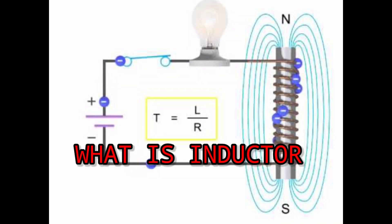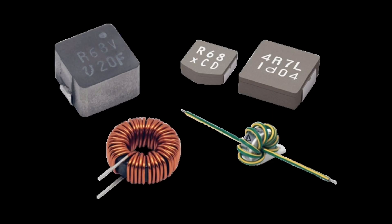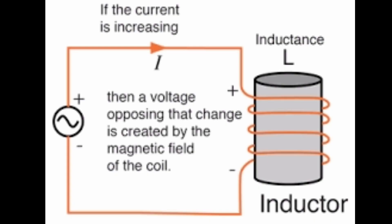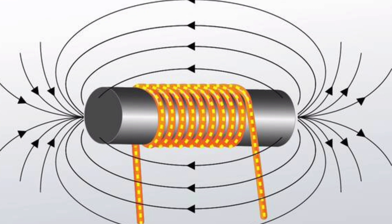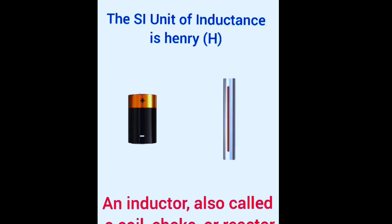Welcome to my channel. Today I discuss what is an inductor. An inductor, also called a coil, choke, or reactor, is a passive two-terminal electrical component that stores energy in a magnetic field.